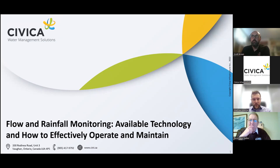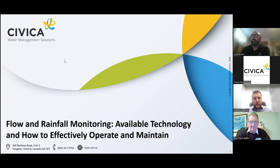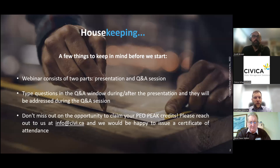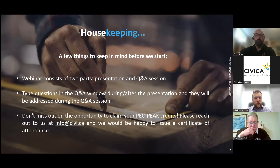This is the second part in a five-part series on flow and rainfall monitoring — available technology and how to effectively operate and maintain. Just a few housekeeping items: this webinar has two parts, a presentation and then a Q&A. There is a Q&A button you can press and type in questions as we go. If you are looking to get PEO credits for this, feel free to reach out to us after the webinar and we'll be happy to issue a certificate of attendance.